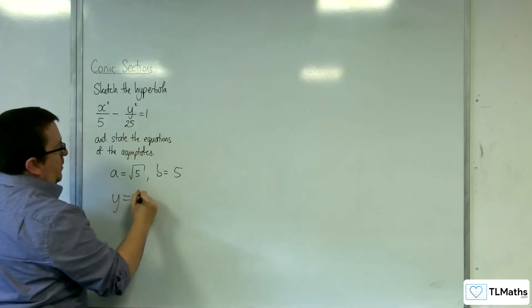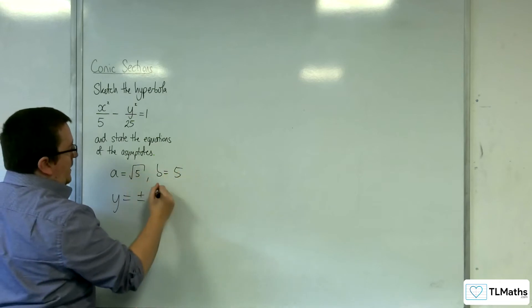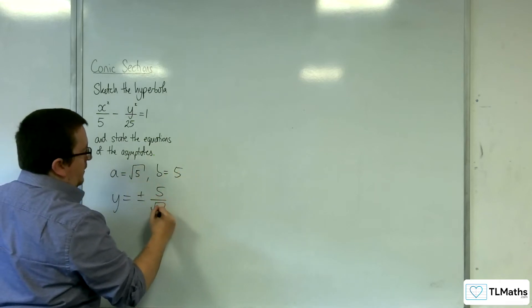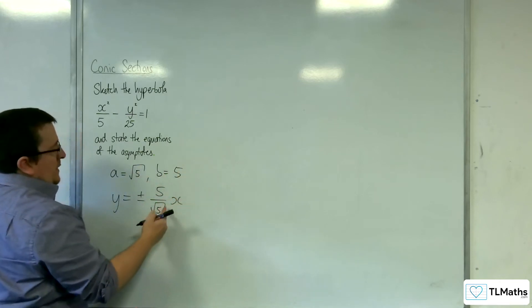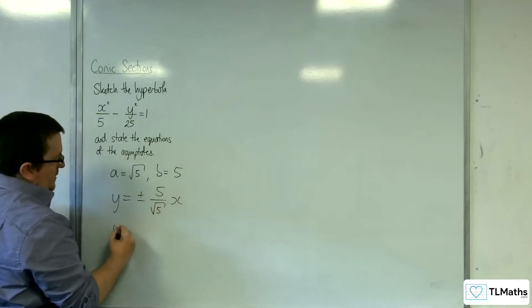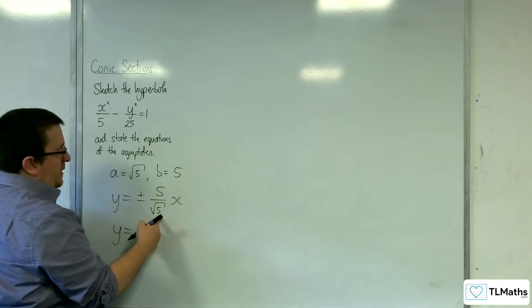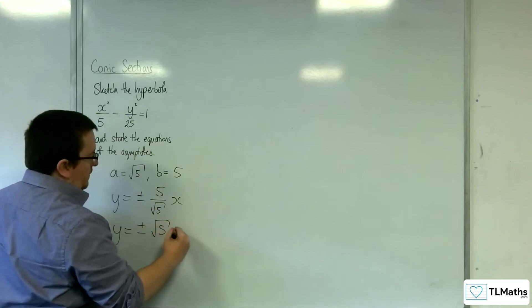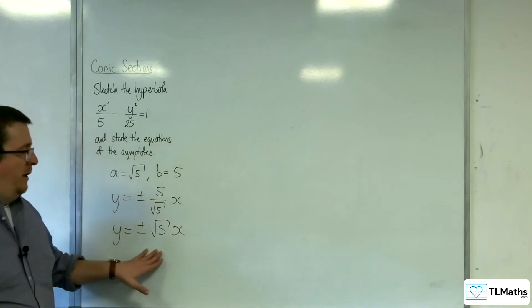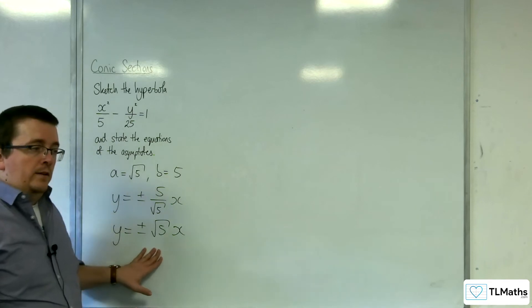So y = ±(b/a), which is 5/√5 times x. This can of course be simplified. Multiplying top and bottom by √5, we get 5√5/5, which is just √5. So y = ±√5x are the asymptotes.